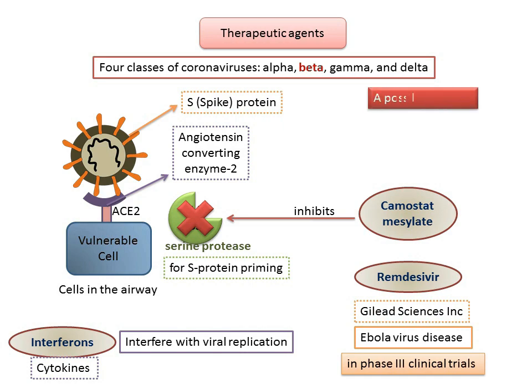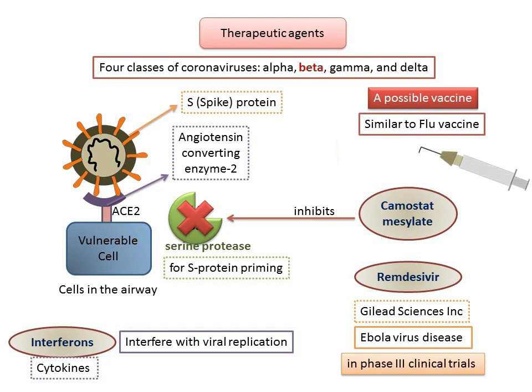It is crucial to develop safe and effective vaccines to control the COVID-19 pandemic, eliminate its spread, and ultimately prevent its future recurrence. Since SARS-CoV-2 shares significant sequence homology with SARS and MERS, vaccines identified in patents related to those viruses could potentially facilitate the design of anti-SARS-CoV-2 vaccines. Hence, a vaccine similar to the flu vaccine is under trial and might be available by 2021.